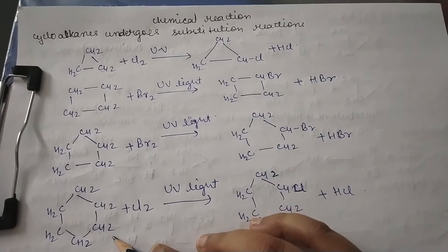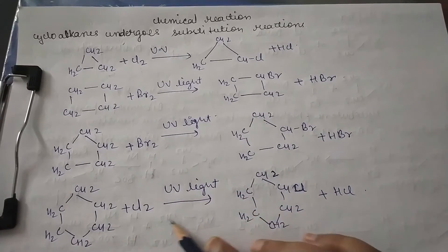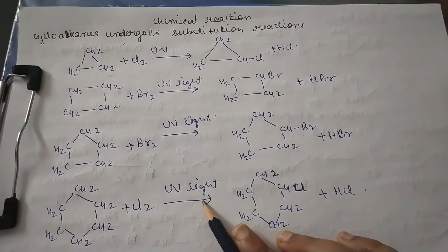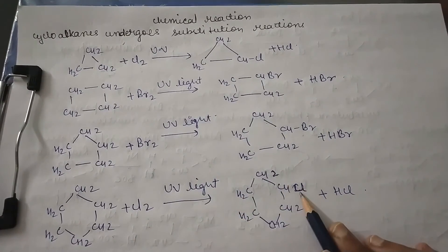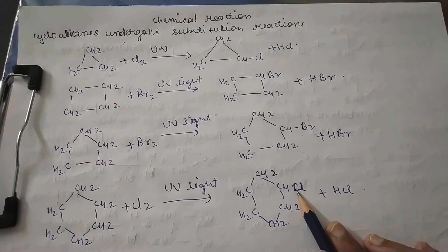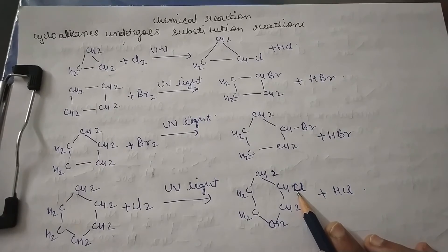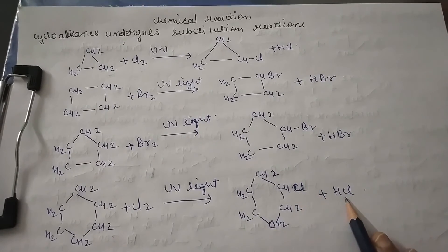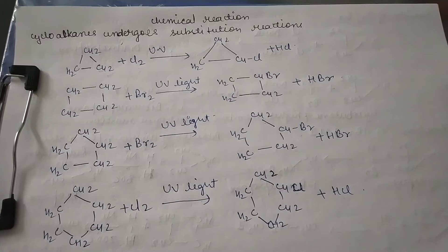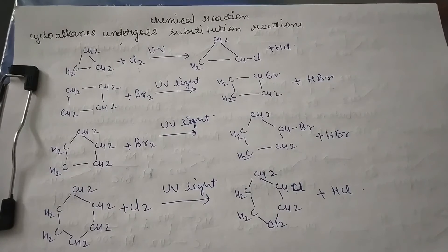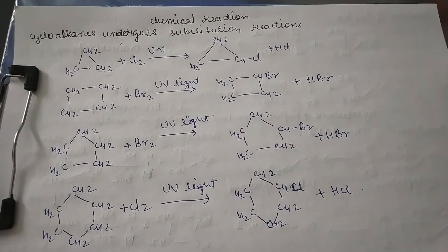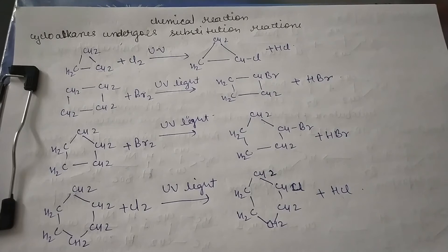For cyclohexane with chlorine in the presence of UV light, one hydrogen is substituted by chlorine. So the substitution reaction takes place in cycloalkane derivatives including cyclopropane, cyclobutane, cyclopentane, and cyclohexane.